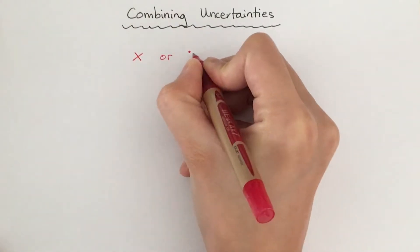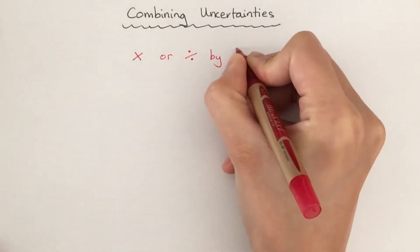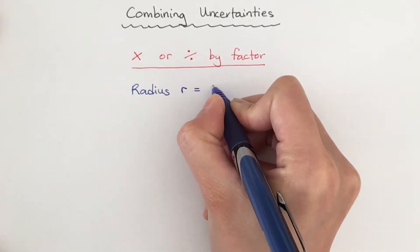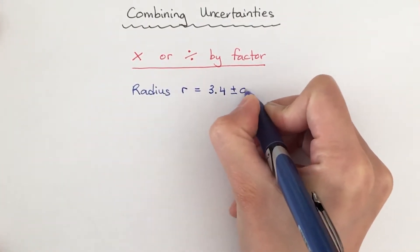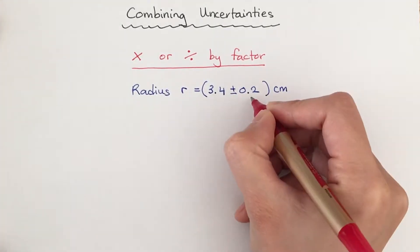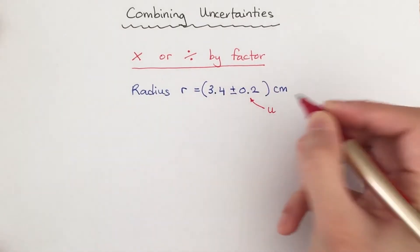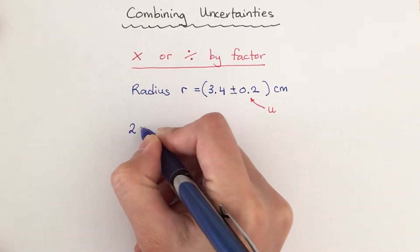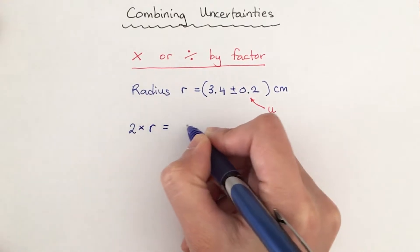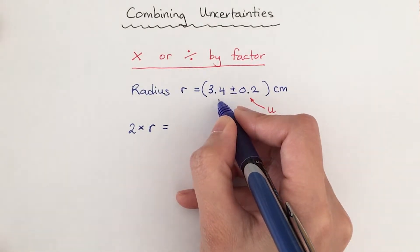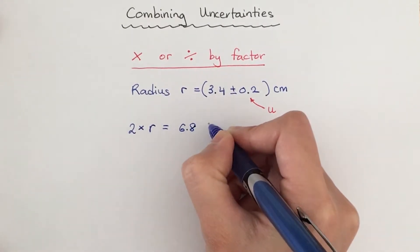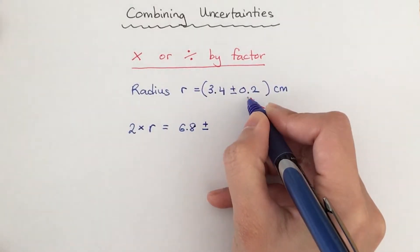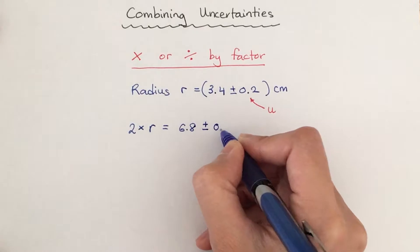Let's first look at what you need to do when you multiply or divide your measurement by a constant. For example, I measure radius r equal to 3.4 centimeters, and it has an absolute uncertainty of 0.2 centimeter. I'm going to label the absolute uncertainty u. So we might want to double the radius — multiply it by 2 — in order to make it the diameter. Doubling the radius gives 6.8 centimeters. What we need to do to the absolute uncertainty is also multiply it by the same factor, a factor of 2 in this case.